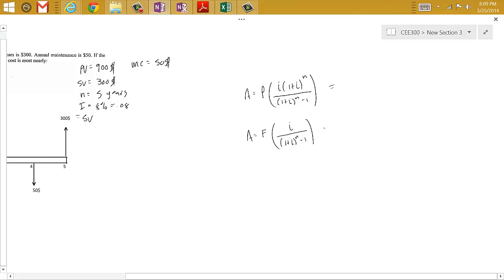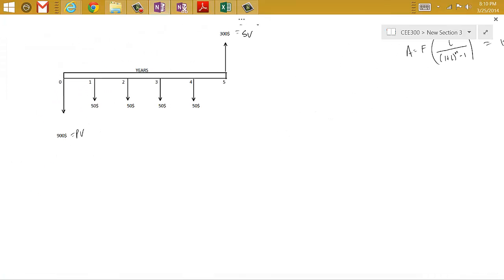So as you can see before I erased it, this is going to be our present value, so this is going to be the annual cost of our present value, and this is going to be the annual cost of our future value.